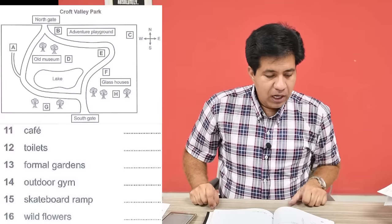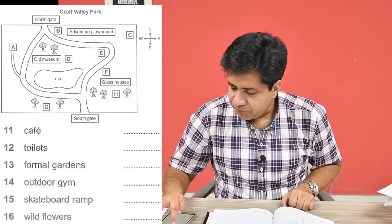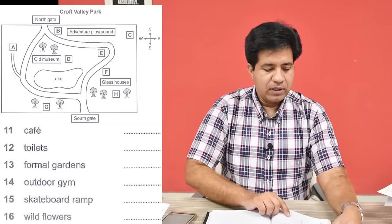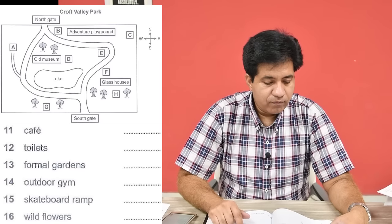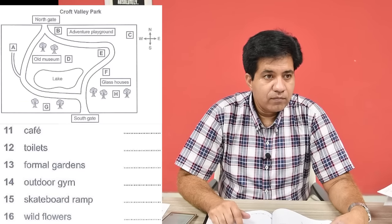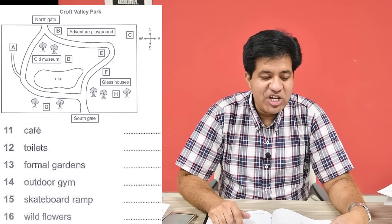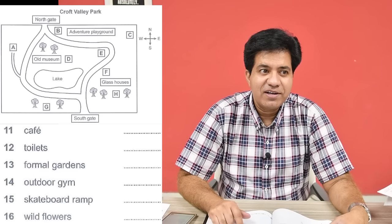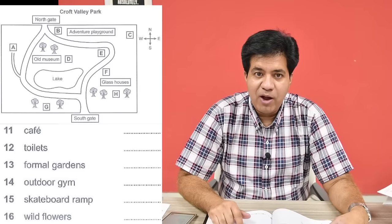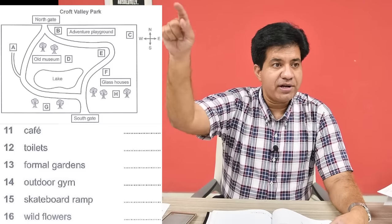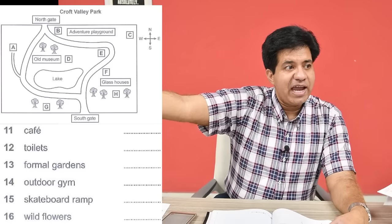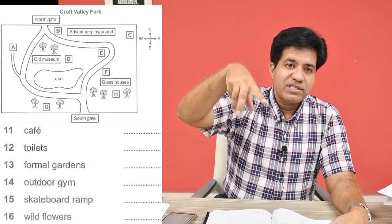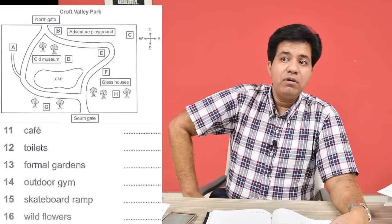Question number 12: 'We're hoping to change the location of the toilets and bring them nearer to the center of the park, as they're a bit out of the way at present near the adventure playground, in the corner of your map.' At present near the adventure playground in the corner — so adventure playground is there and corner is there. But it said 'we wanted to move it to the center' — that was a trap. 'At present' means now, so the answer is the current corner location.